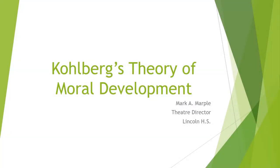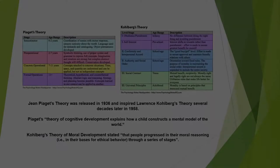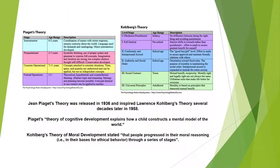Kohlberg's Theory of Moral Development. Jean Piaget's theory was released in 1936 and inspired Lawrence Kohlberg's theory several decades later in 1958. Piaget's theory of cognitive development explains how a child constructs a mental model of the world. Kohlberg's theory of moral development stated that people progressed in their moral reasoning — their basis for ethical behavior — through a series of stages.